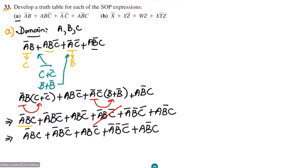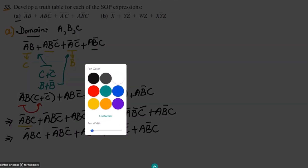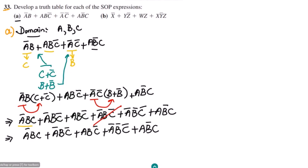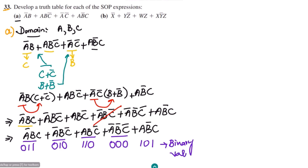Now let me write the binary values for each term using blue color. For A prime B C: 0 1 1. For A prime B C prime: 0 1 0. For A B C prime: 1 1 0. For A prime B prime C: 0 0 0. Wait — that last one is 0 0 1. And for A B prime C: 1 0 1.